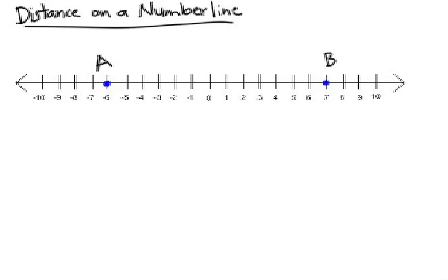Now, when I say distance, we're talking about how many units between A and B. The easiest way is to just count how many units there are. From negative 6 to positive 7, there's 13 units. There's my answer, 13. However,